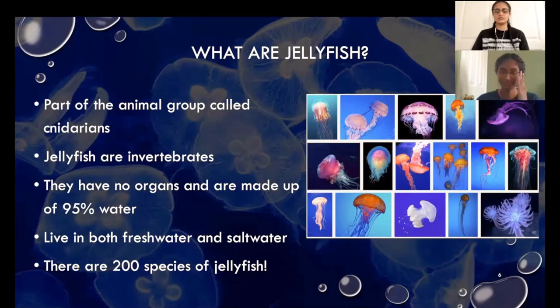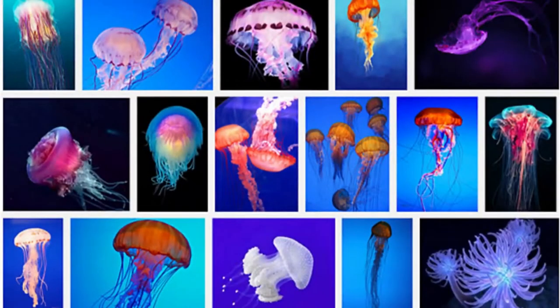Jellyfish can live in both fresh water and salt water because they tend to follow the currents of the ocean. There are 200 species of jellyfish out there, and although there are so many different types of jellyfish, they all share the same basic life cycle. This picture shows just some of the different jellyfish that exist.